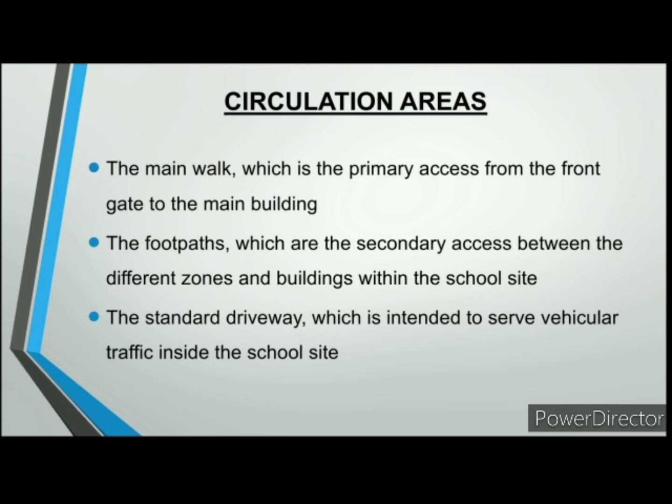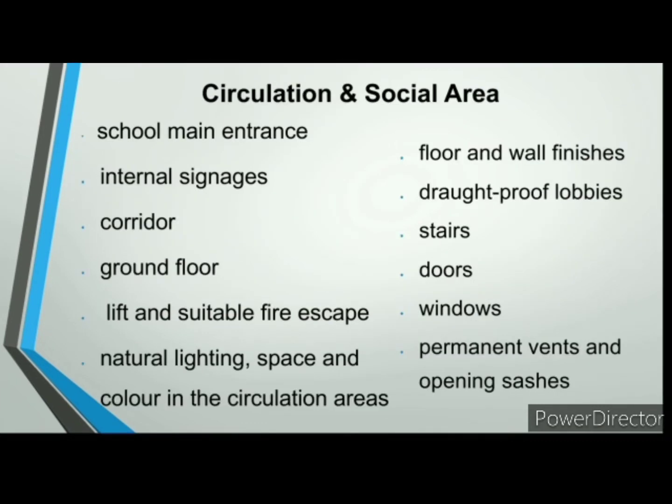There should be a clear circulation strategy covering all levels from access to the buildings to local circulation between spaces. Circulation and social areas are generally calculated on the basis of 18% of the total area of teaching and non-teaching space within the internal face of the external walls of the school. The school main entrance should have a strong sense of arrival and space. Internal signage should be clearly visible to all users.